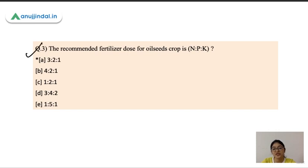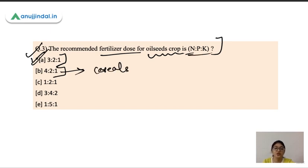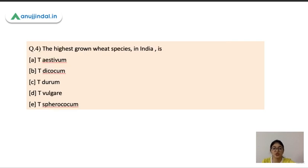The next question is the recommended fertilizer dose for oil seed crop is? So fertilizer is basically nitrogen, phosphorus and potassium. The ratio should be nitrogen in the ratio of 3, phosphorus in the ratio of 2 and potassium in the ratio of 1. The NPK ratio for cereal crop is 4:2:1. And oil seed crop is 3:2:1.